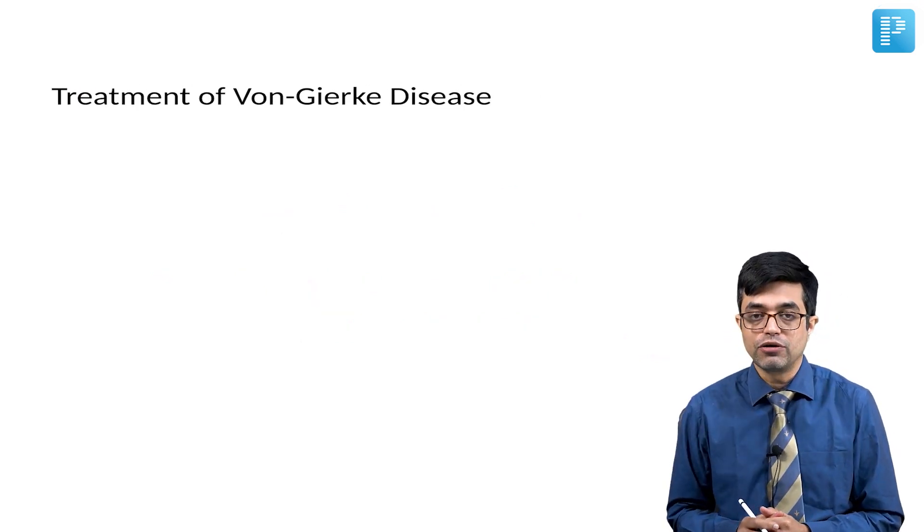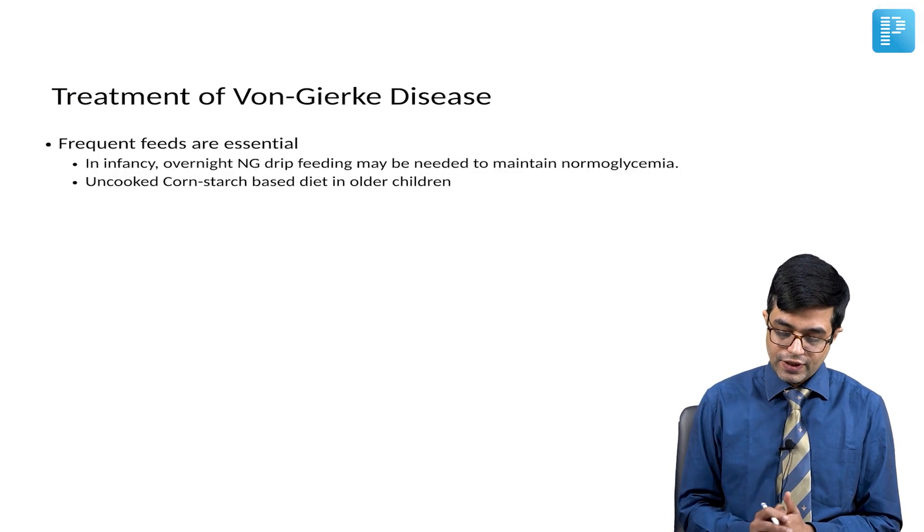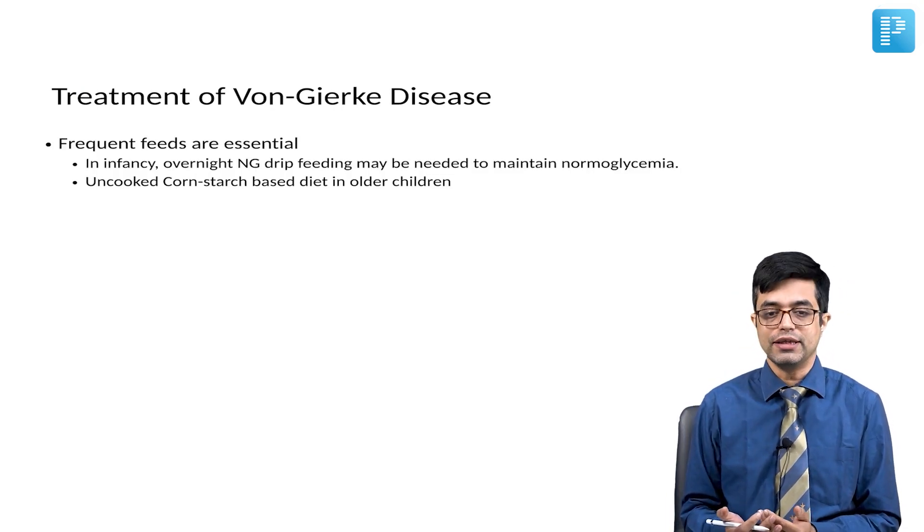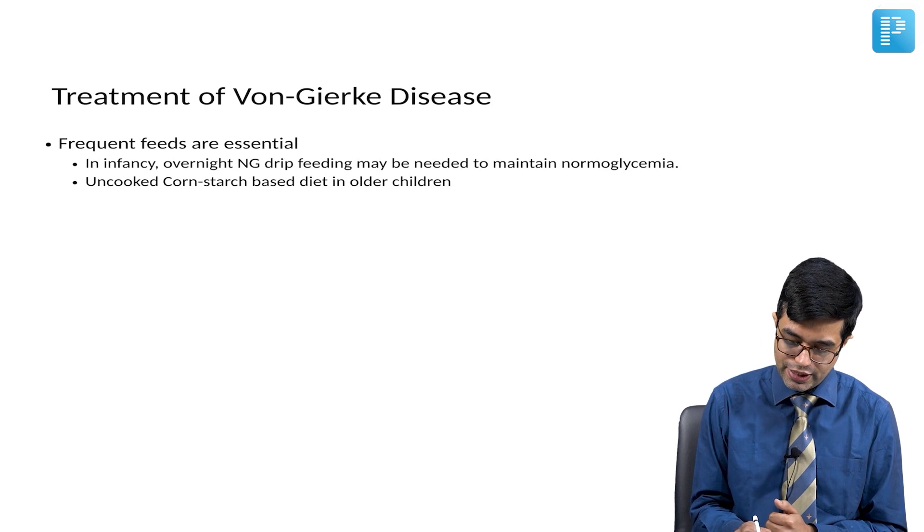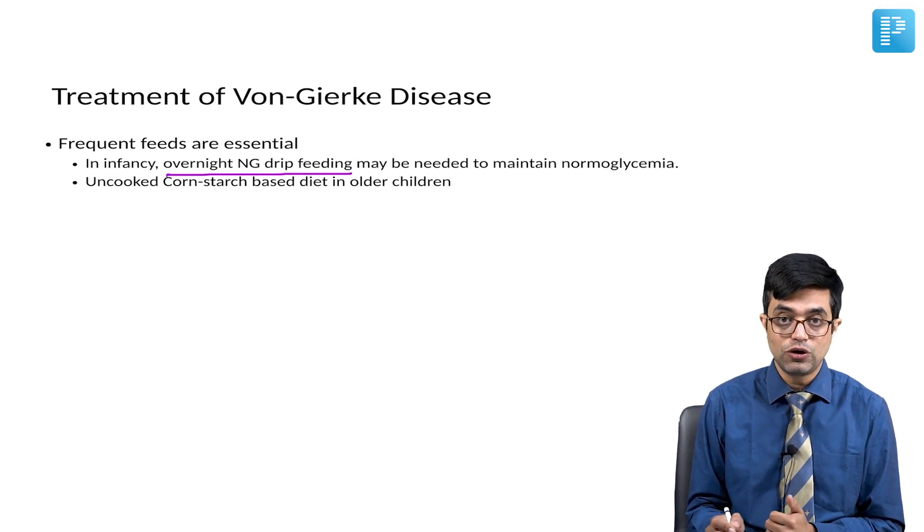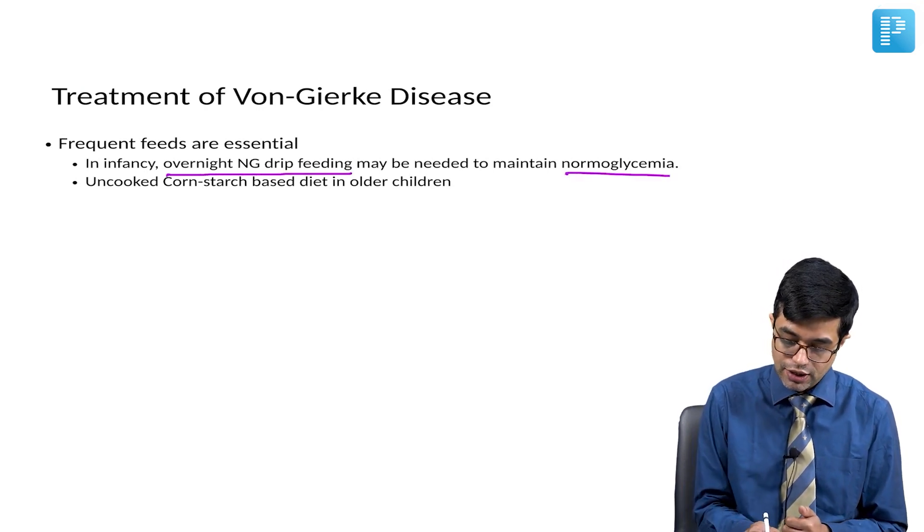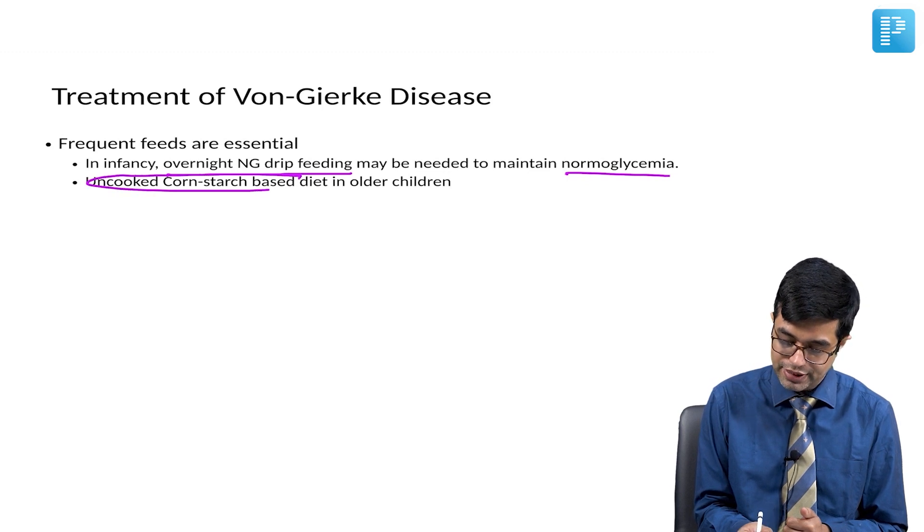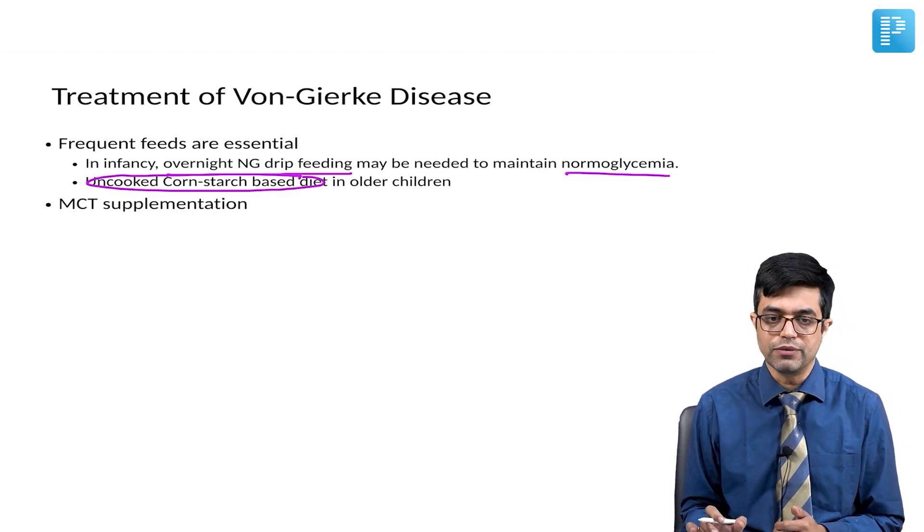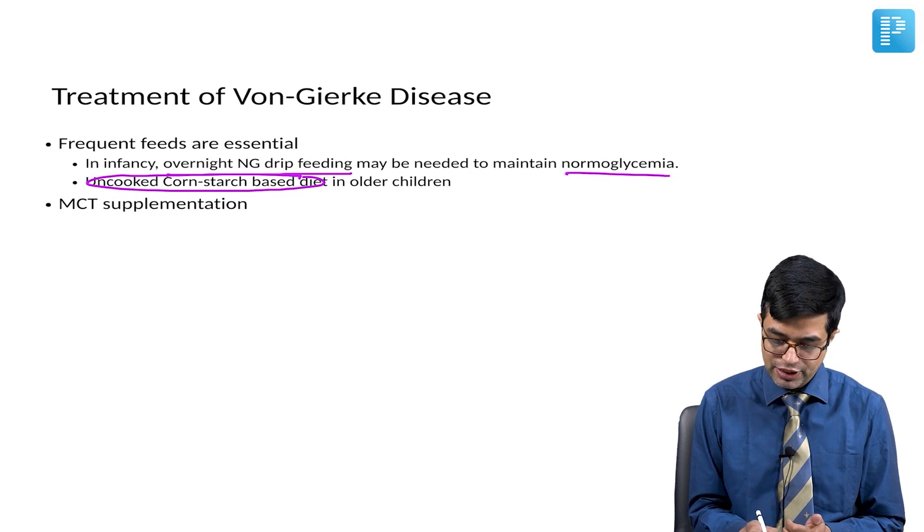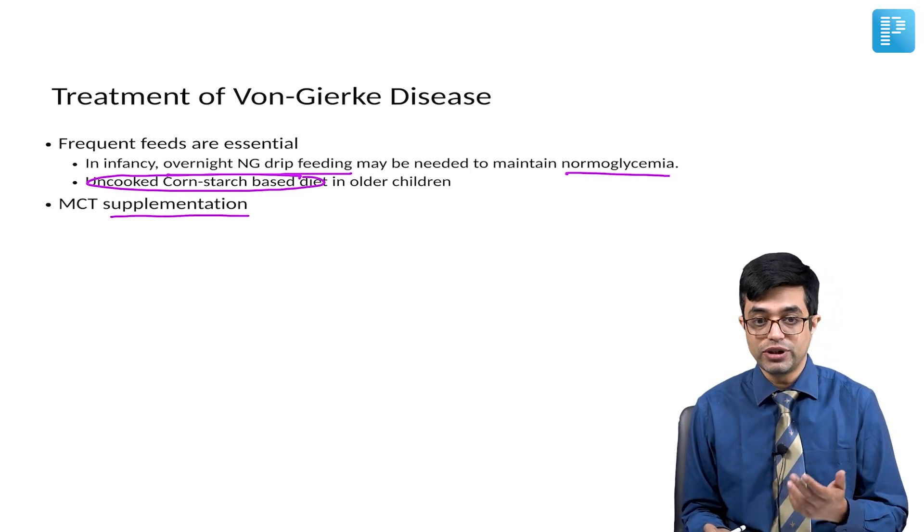Now, moving to the treatment of Von-Gierke disease. Frequent feeds are essential because hypoglycemia is there. So, in infancy, overnight nasogastric drip feeding may be needed to maintain normoglycemia. Uncooked cornstarch-based diet is appropriate in older children. Medium-chain triglyceride supplementation improves the growth in these children.